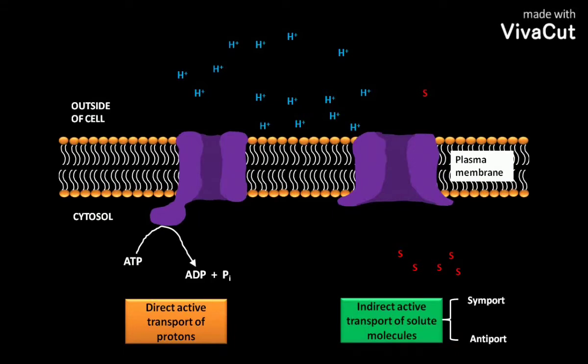Here we will focus on symport, in which two solutes move in the same direction. In most cases, one of the two solutes is an ion like H+ ion. In other cases, one of the two solutes is Na+ ion. In this video, the H+ ion moves exergonically down its electrochemical gradient.